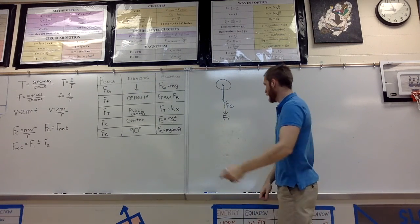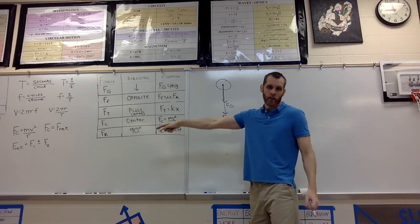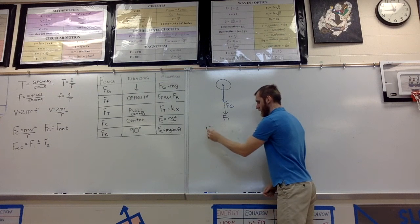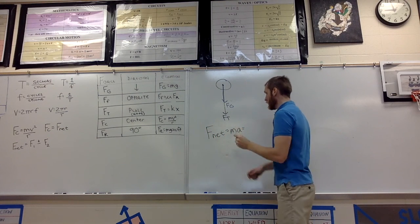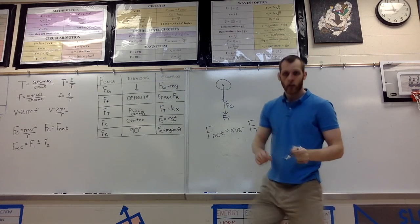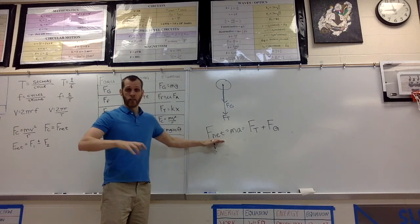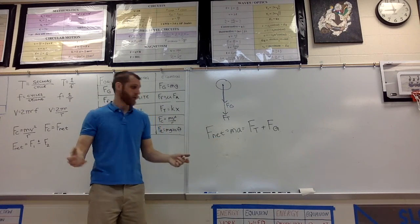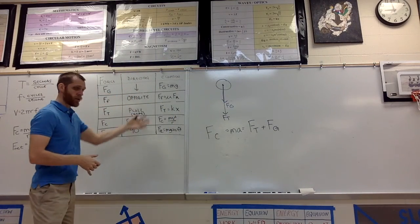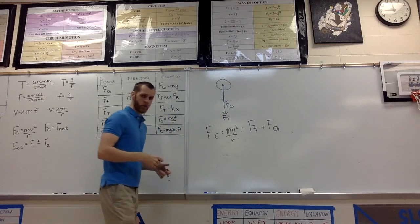If I want to write a net force equation for this ball, first: is there friction? Negligible. Is there a reaction force — is it resting on anything, is anything pushing on it? No. So it's just these two. The net force equation would look like this: F_net equals ma equals Fg plus Ft because they're going in the same direction. Now because it's going in a circle, the net force is actually centripetal force. Centripetal force has its own equation: mv² over r.